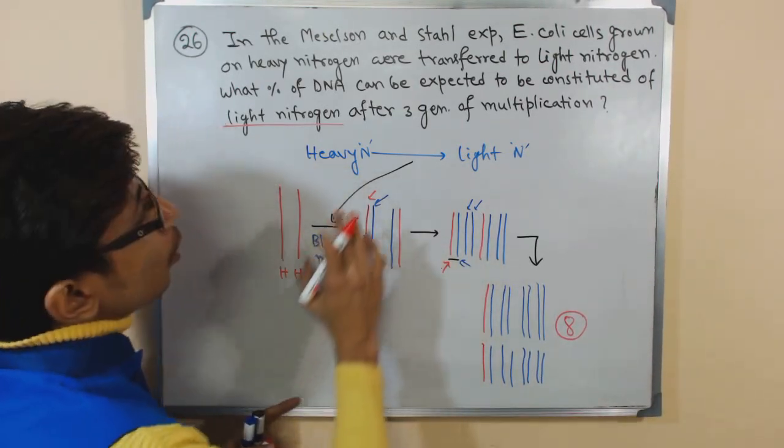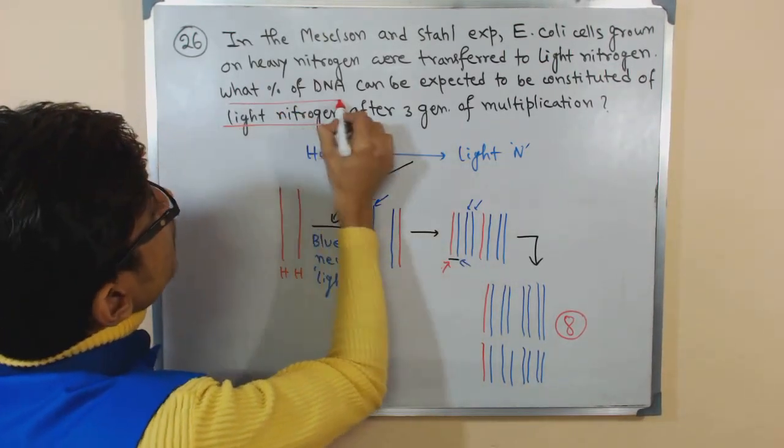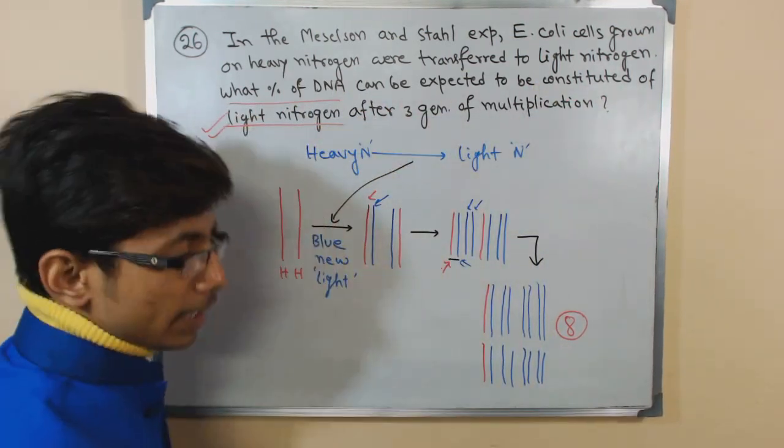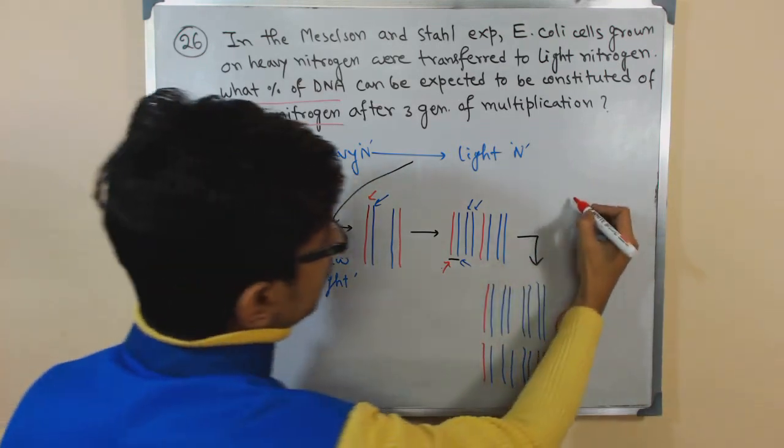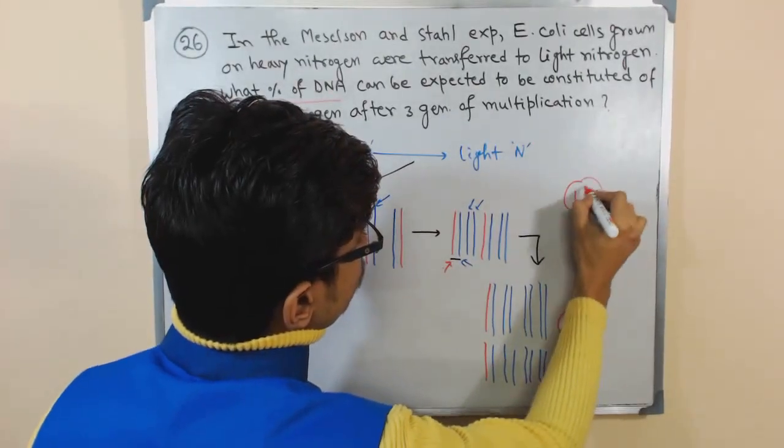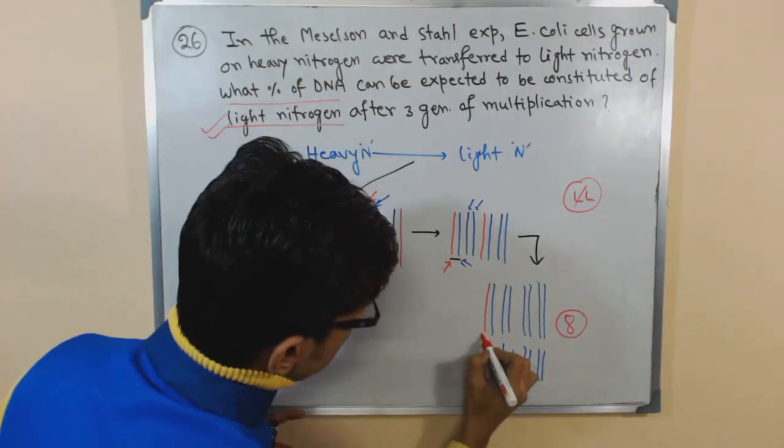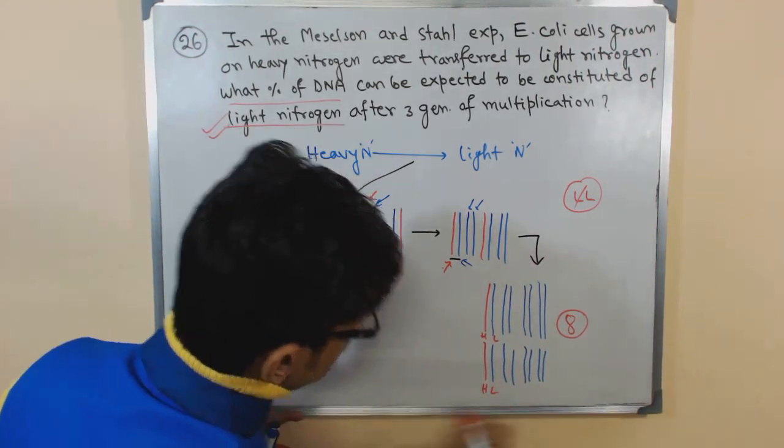So now the question is what percentage of the DNA can be expected to be constituted of only light nitrogen? That means only light, light, both strands will be light. In this case, this one is heavy-light, this one is heavy-light.